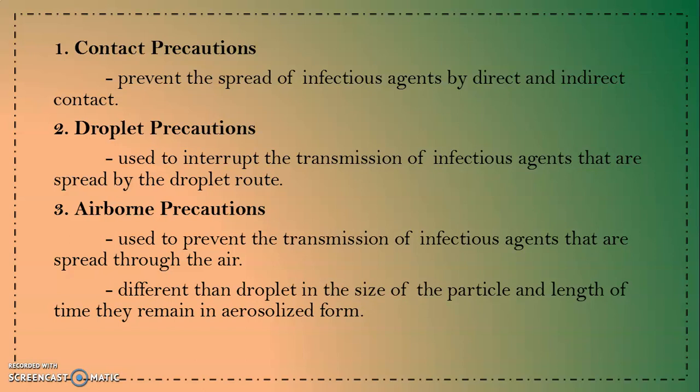Contact precautions prevent the spread of infectious agents by direct and indirect contact. Droplet precautions are used to interrupt the transmission of infectious agents that are spread by the droplet route. Airborne precautions are used to prevent the transmission of infectious agents spread through the air. Airborne differs from droplet in the size of the particle and the length of time particles remain in aerosolized form.